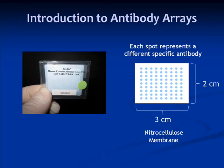Antibody arrays are small nitrocellulose membranes printed with multiple different antibodies in a grid layout. Each antibody spot is specific for a different protein, and there may be up to 100 different antibodies spotted on one membrane. This technology enables the researcher to detect multiple proteins in one small sample aliquot.